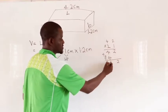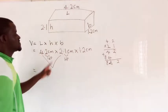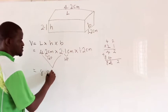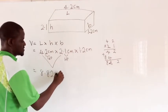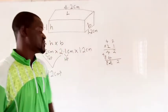So we are going to have 4.2 cm times 2.1 cm is equal to 8.82 square cm. Remember, cm times cm gives you square cm.